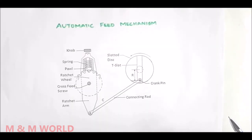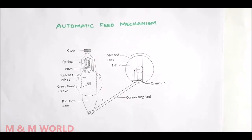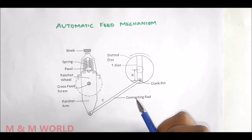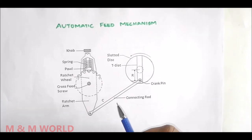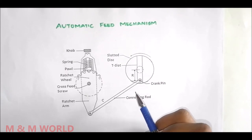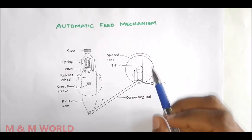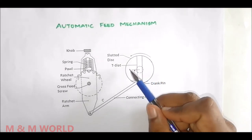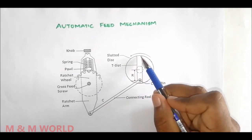The down feed movement can be given manually, but the cross feed can be given manually or automatically. This figure illustrates the automatic cross feed mechanism of a shaper. Here we have a slotted disk, and on it we have a T-slot.